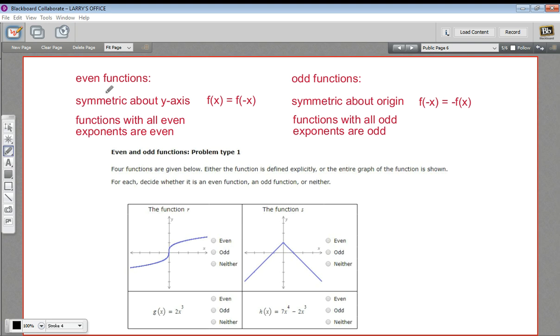When a function is even, if you have its graph to look at, you can immediately tell because it's symmetric about the y-axis. So whatever happens on the left side of the y-axis happens exactly the same on the right side of the y-axis. You could fold that piece of paper at the y-axis and they would match.